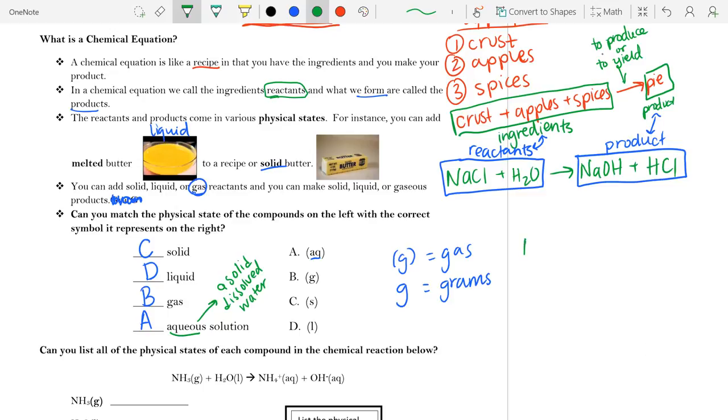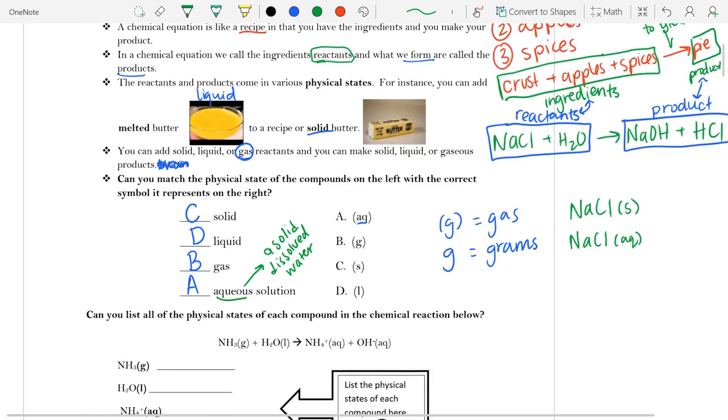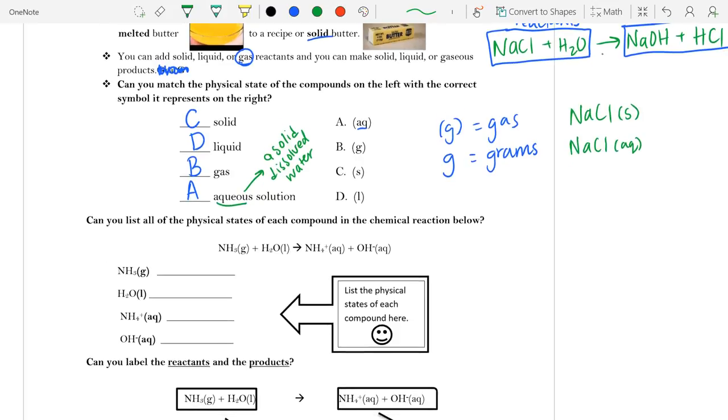So, it's just referring to solid dissolved in water. So, if we think of, again, NaCl, which we know is table salt, normally when we put it on our french fries, it's a solid. But we also know that when we go to the beach, we actually have NaCl that's aqueous because it's salt that's been dissolved in the water. That's why we have salt water.